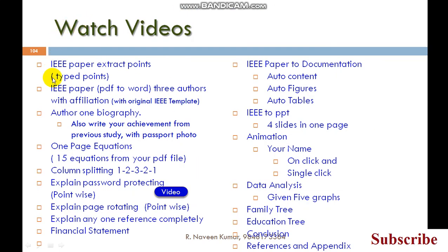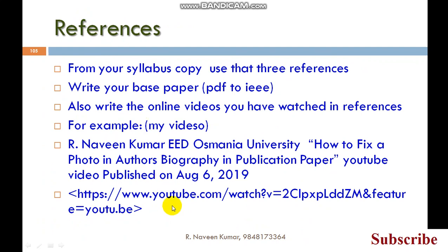These are the computer skills information. Parallel with the drawings, we have learned computer skills also. For that, the first one is IEEE paper, extracting points you have written in observation notes. Now you type it. Watch the videos and follow the information. You copy paste the same thing in the documentation. IEEE paper with original template, use the original template and keep author biography also. Write the author biography for additional information, achievements from previous study, and passport size photo. There's one page for equations, column splitting, password protect. In the next classes I will explain financial statements, Word documents, auto indexing.